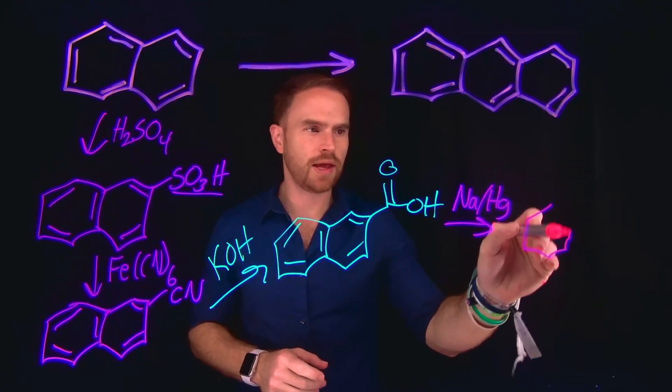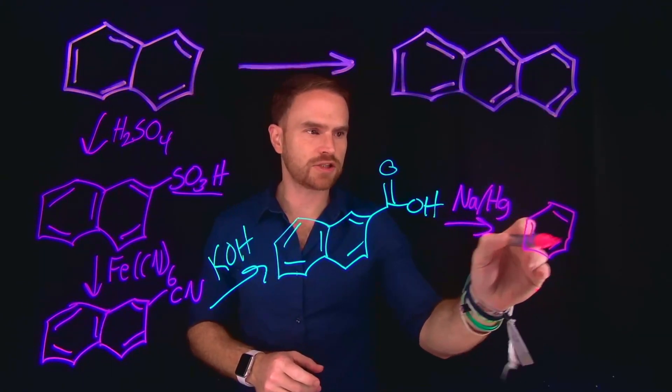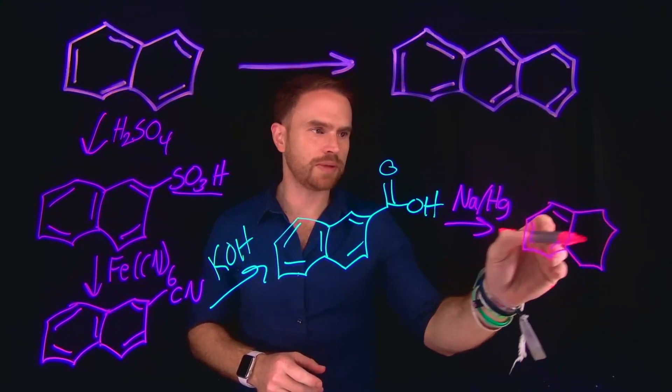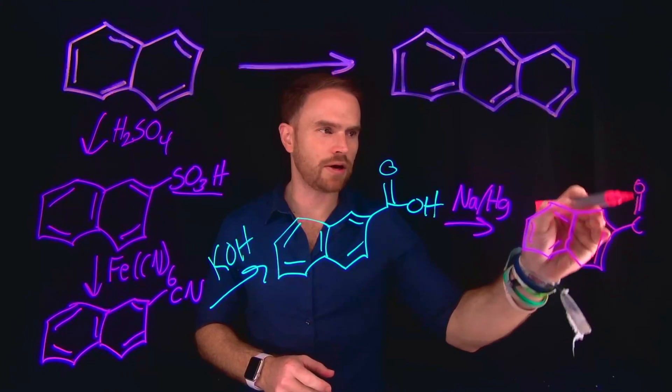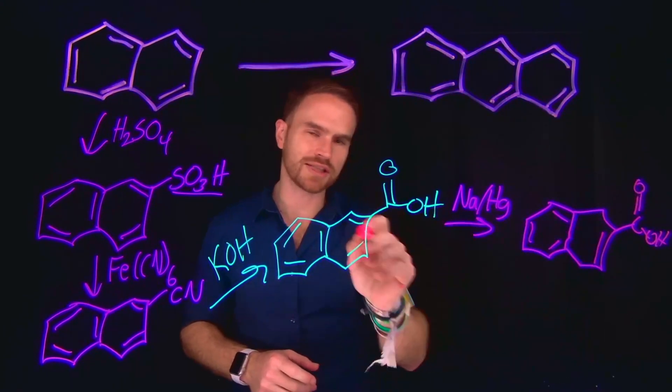Now importantly, when we form this product of this transformation, we are going to be left with a double bond at this position. This is going to be our resulting product following this Birch reduction.